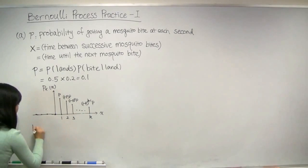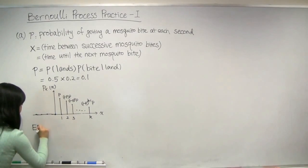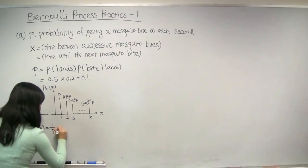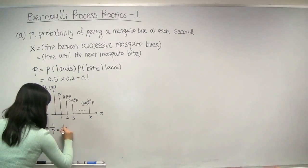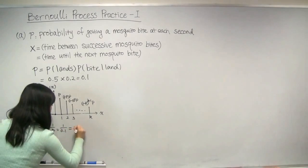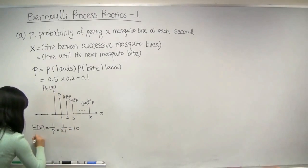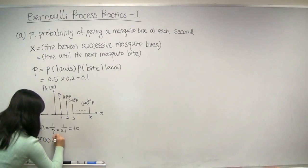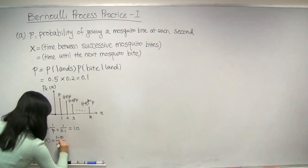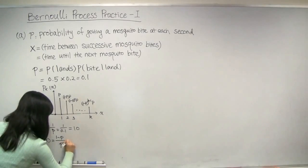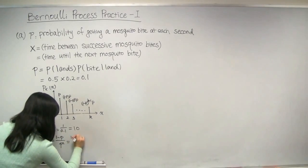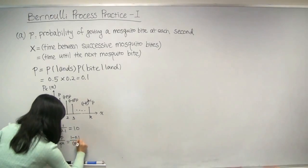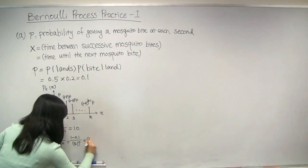Therefore, the expected value of x is equal to 1 over p, which is equal to 1 over 0.1, which is equal to 10. And the variance of x is equal to (1 minus p) over p squared, which is equal to (1 minus 0.1) over 0.1 squared, which is equal to 90.